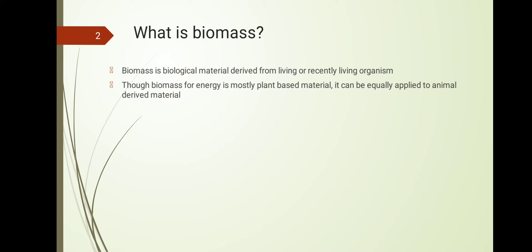Another important thing to note is that even though biomass is mostly plant-based material, it can also apply to animal waste or animal derivatives. For example, chicken waste and beef tallow coming from slaughterhouses can also be treated as biomass and used for biofuel and energy production.